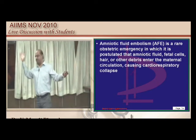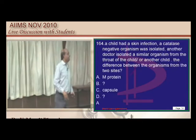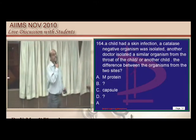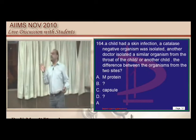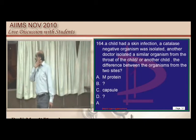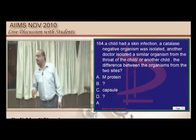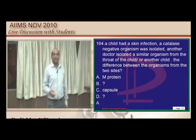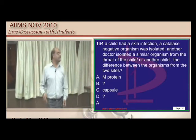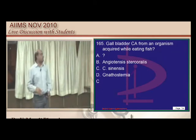A child with skin infection where a coagulase-negative organism is isolated, which differs between throat and skin — this is based on Lancefield classification differences of streptococcus strains, which depend on carbohydrate antigen. Also, Clonorchis sinensis is associated with gallbladder carcinoma.